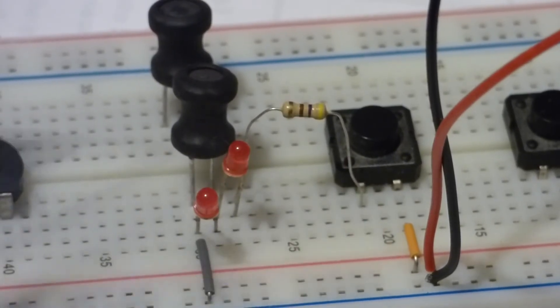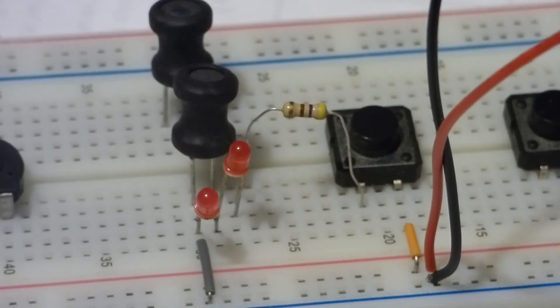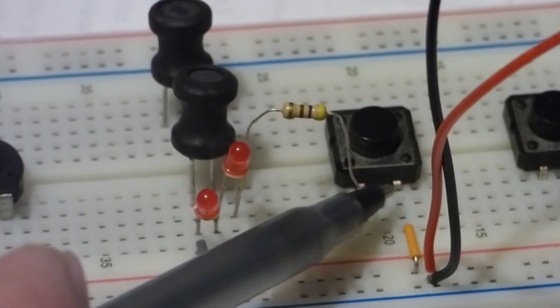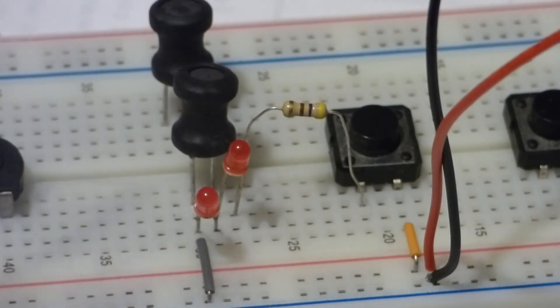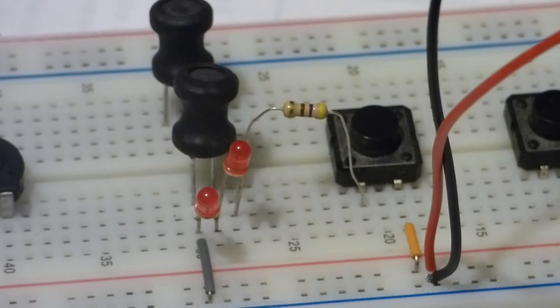That's one of the dangers of inductors and other coiled components like transformers. They keep the current going. The bigger the inductor, the more current, and the more current going through it, the more it's going to keep that current going. It can damage switches and stuff, it could even electrocute you.